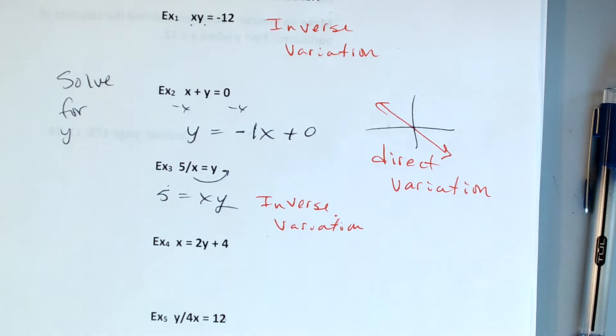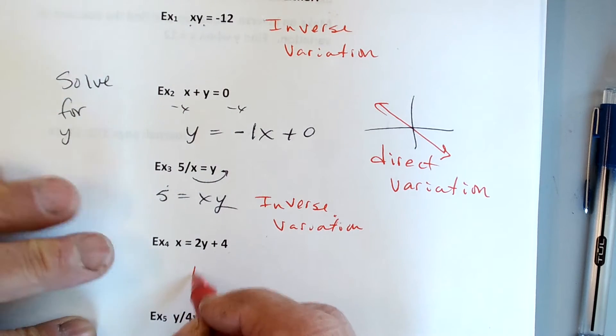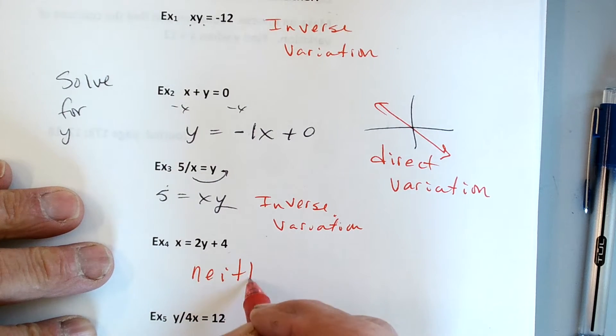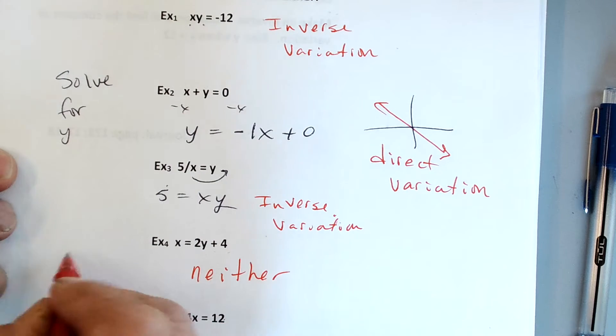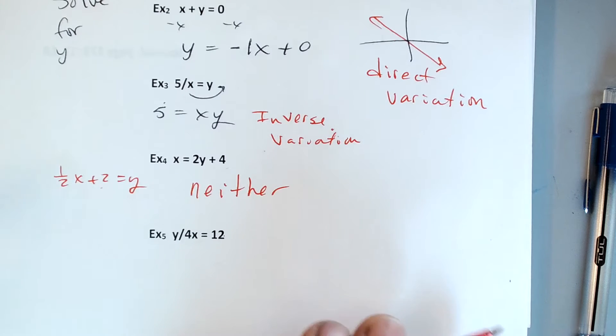Example 4, with that plus 4 here, it's going to mess everything up. This plus 4 just messes up, so it's neither. It can't be xy equals something. It would be a straight line, but it's going to go through 4, so this one's going to be neither. If I tried to solve for y, it would be one half x plus 2 equals y. That would be a straight line, but it would go through 2. So to be direct, it's got to go through 0.